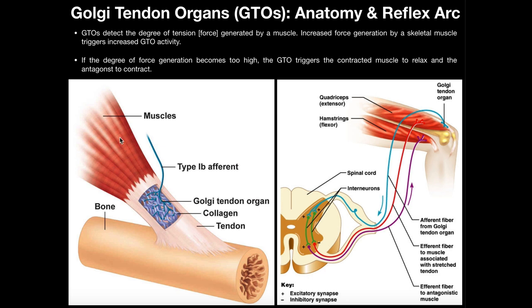Here's a skeletal muscle. Most skeletal muscles attach to their corresponding bone through an indirect attachment called a tendon, shown here in white. Tendons are composed of dense regular connective tissue, and as a consequence, running along their length, they have many collagen fibers oriented along the length of the tendon.